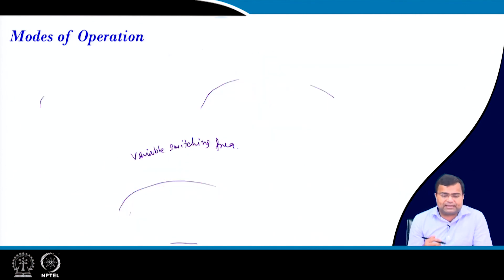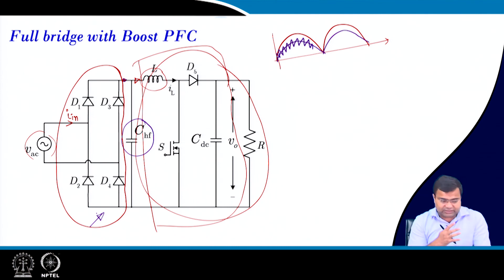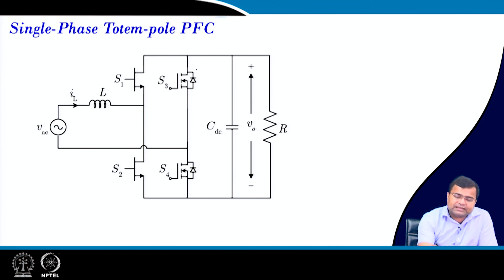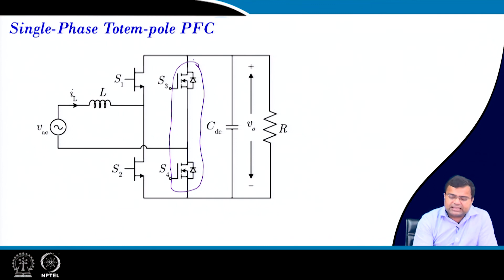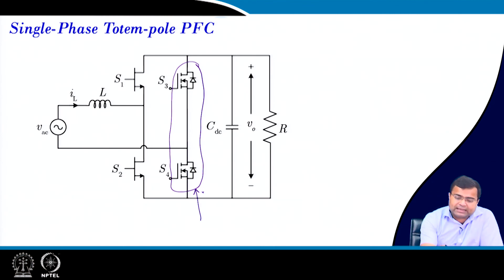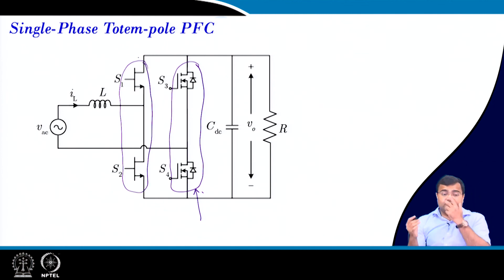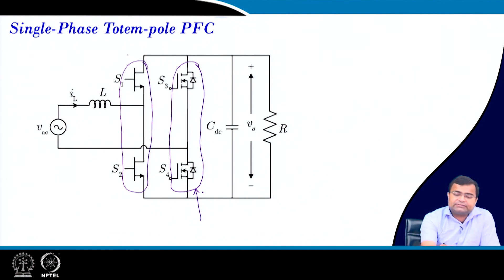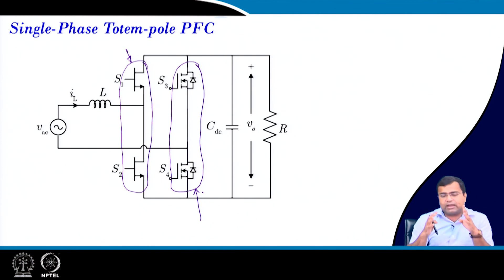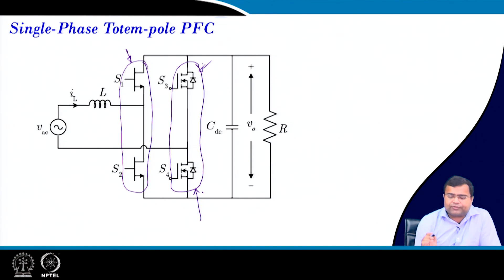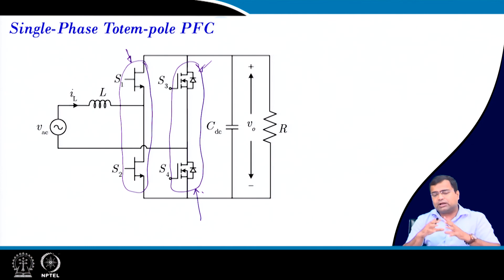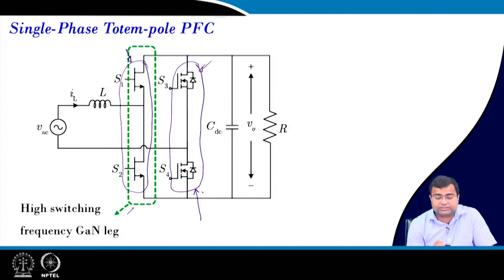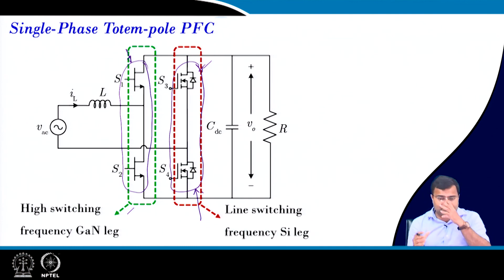For totem pole PFC, the conventional diode bridge is replaced. With wide bandgap devices, one half-bridge of diodes is replaced with MOSFETs whose body diodes act as the diode network. One leg operates at line frequency (50 or 60 Hz), while the other leg uses high-frequency wide bandgap devices — specifically GaN devices or silicon carbide. In this course a GaN-based totem pole PFC will be demonstrated, where the GaN leg operates at hundreds of kilohertz and the silicon leg operates at low line frequency.